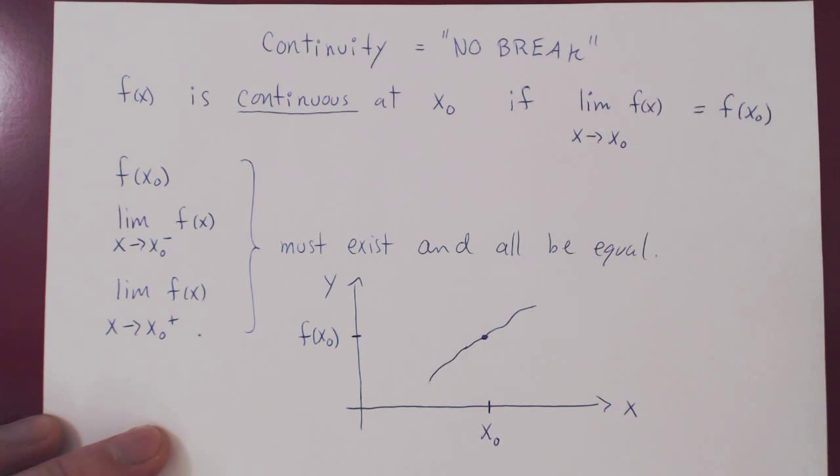So wherever they are defined, they are automatically continuous. And in this course, we'll take this for granted. And so when we look for discontinuities, continuity means no break. Discontinuity means that there is a break in the function. And so when we look for discontinuities, points where the function is not continuous, we'll look at points where the function may be undefined.